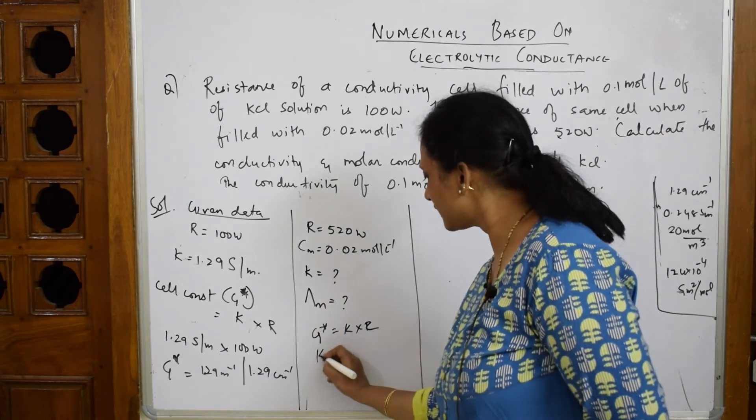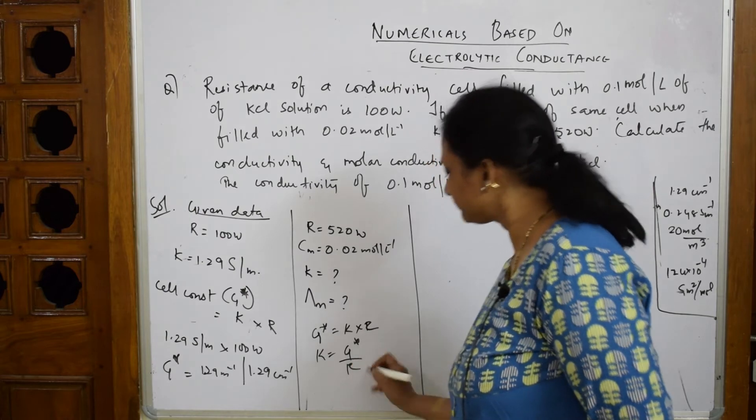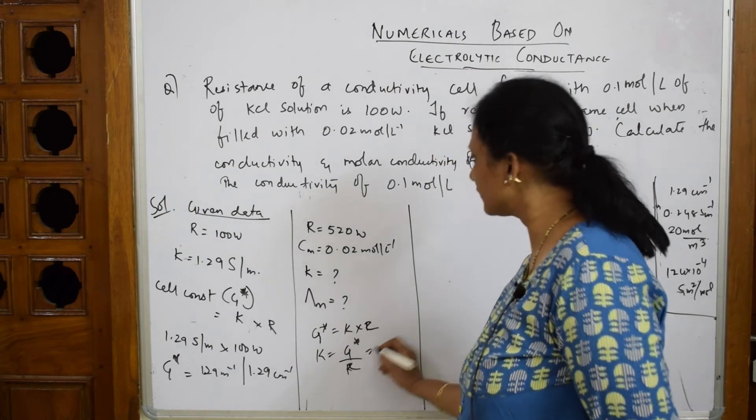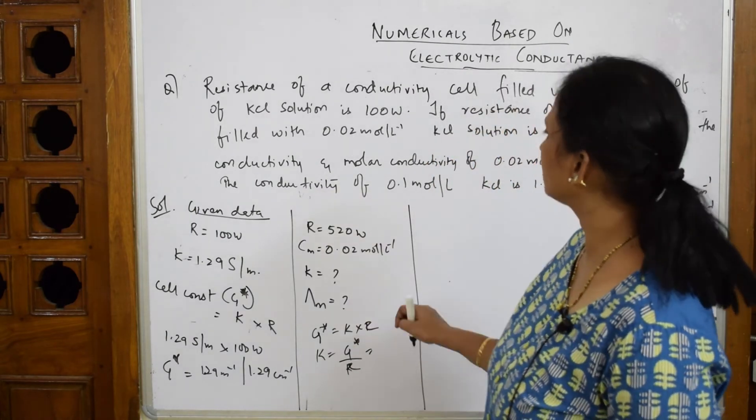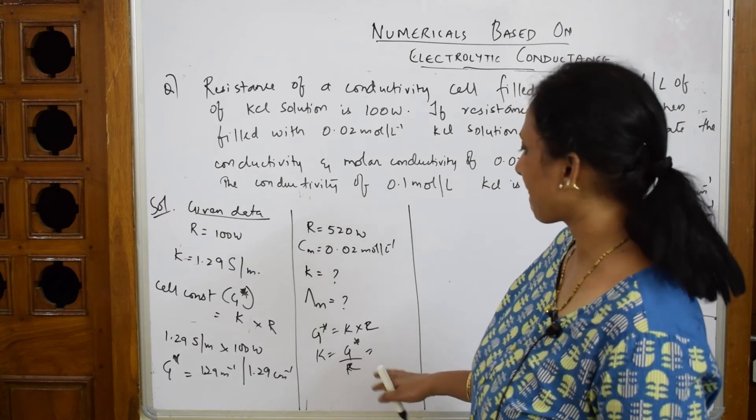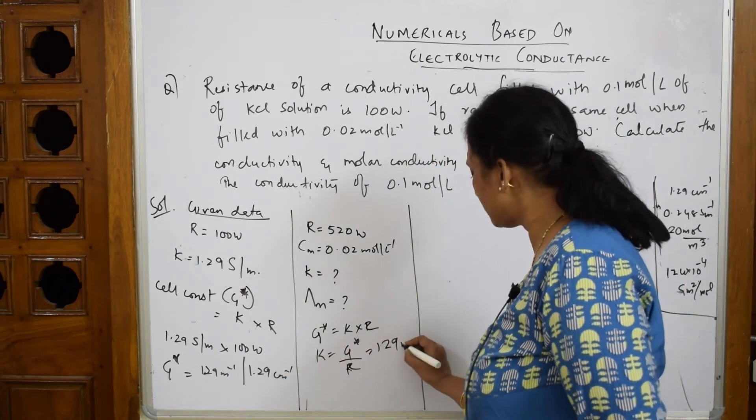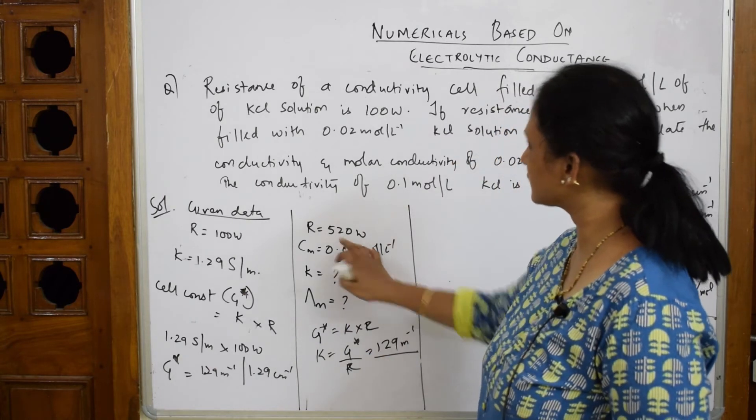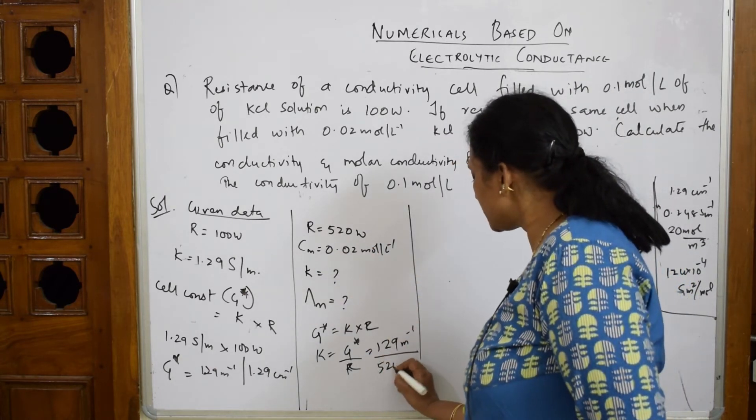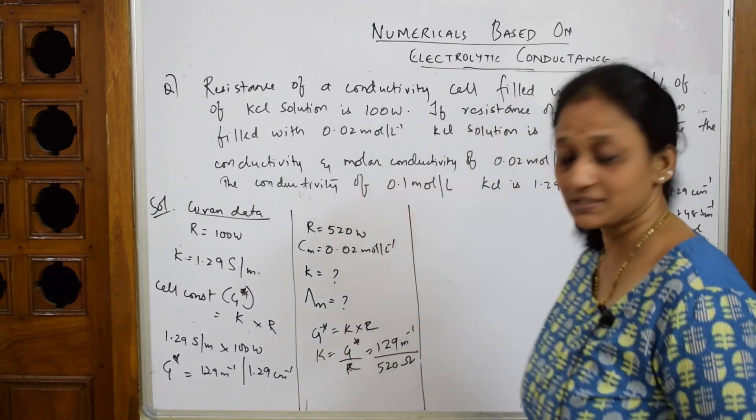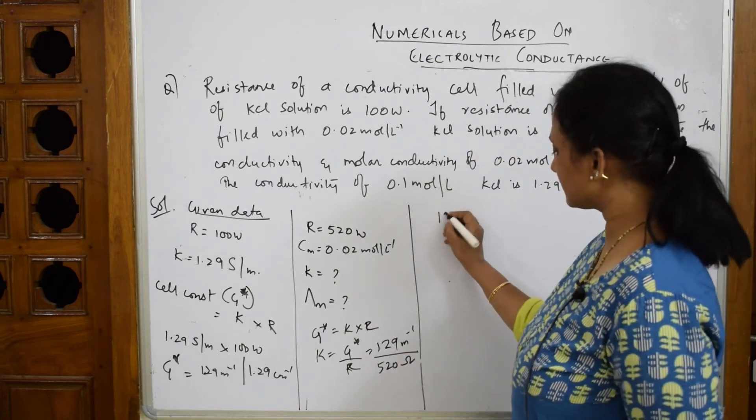G* is 1.29 m⁻¹ divided by the resistance of 520 ohms.